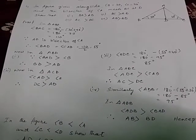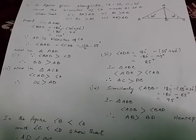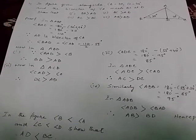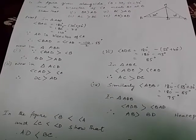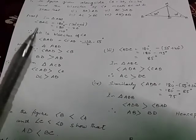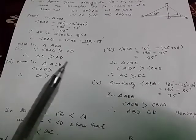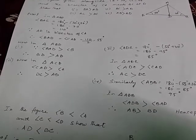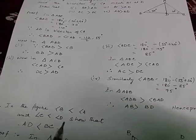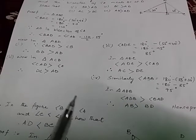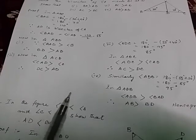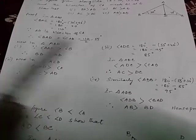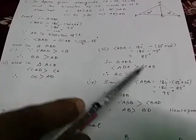Now in the whole triangle ADC, 180 minus 55 plus 40. So 180 minus 95. So angle ADC is equal to 85. So in triangle ADC, angle ADC is greater than angle CAD. Therefore AC is greater than DC.